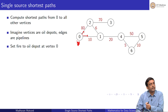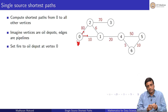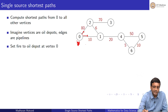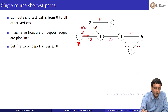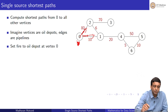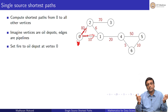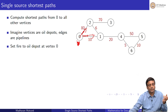The fire travels in all directions at the same speed. It is traveling towards vertex 1 and also towards vertex 2, but the length of the edge determines which one will burn next.